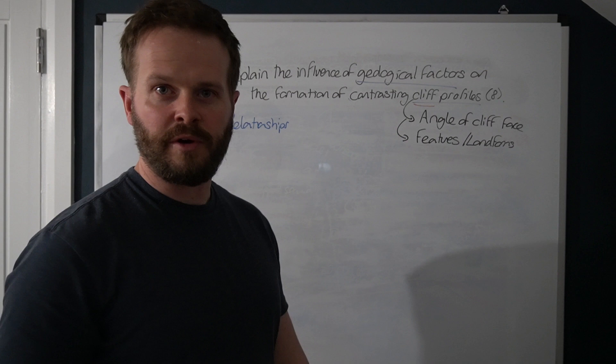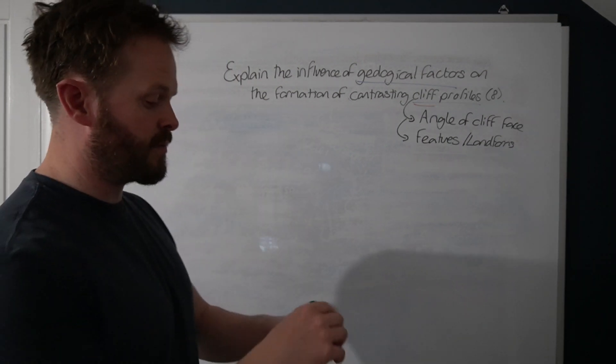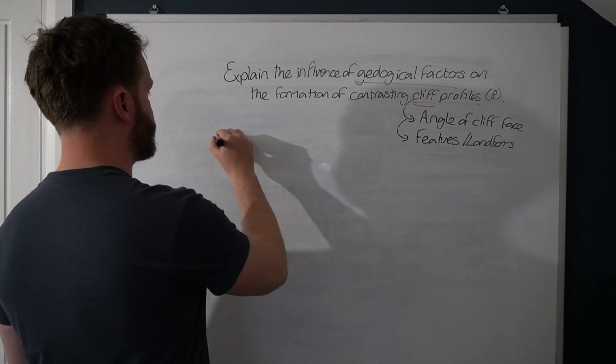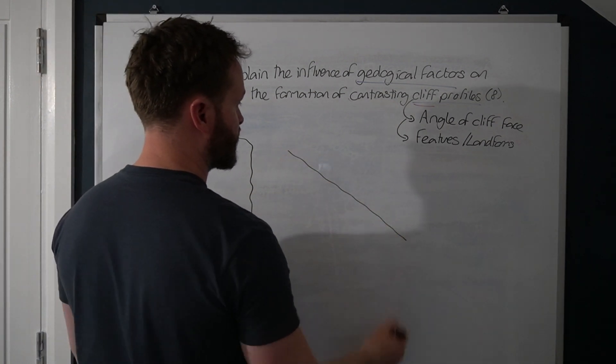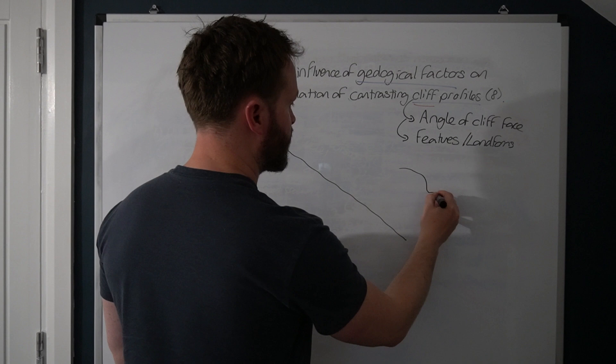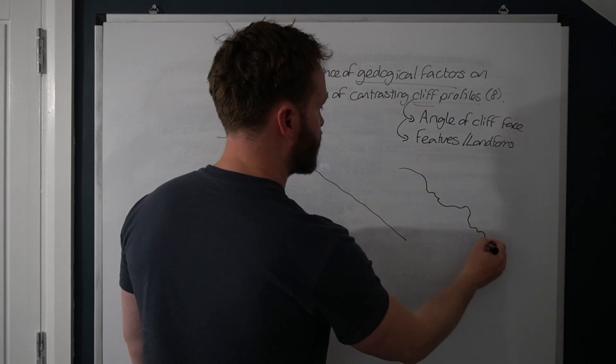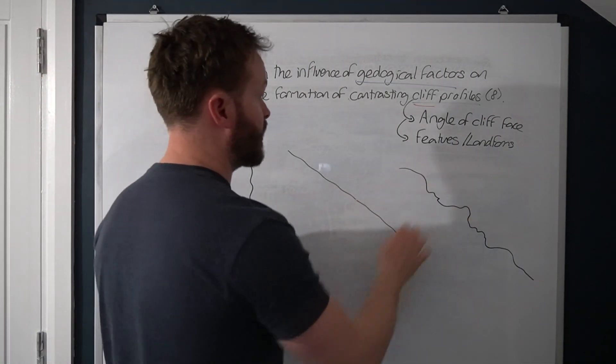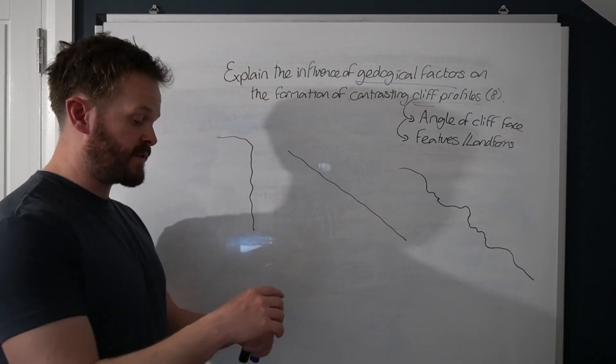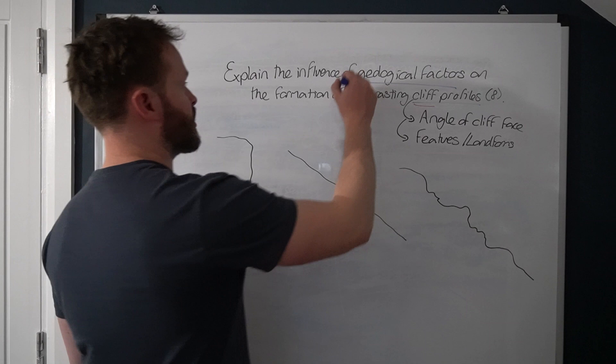So let's go through some cliff profiles, some examples. I gave some before. Sometimes your cliffs can look like this. Sometimes they can look like this. Sometimes they can look like this. So what we would say is that they are contrasting cliff profiles. So how can we relate this to geological factors?